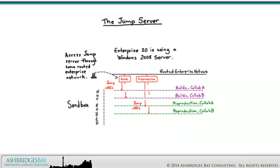Enterprise 20 is using a Windows 2008 server. We'll build a Builds server for the Builds cluster with VNICs on the Builds VLANs, and a pre-production server for the pre-production cluster with VNICs on the pre-production VLANs.